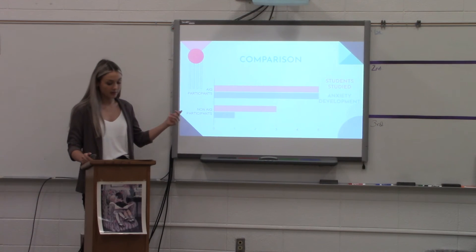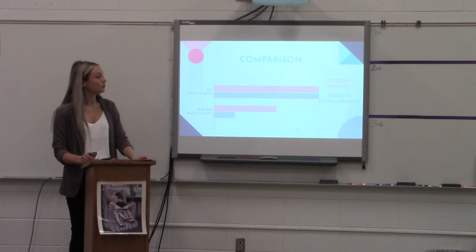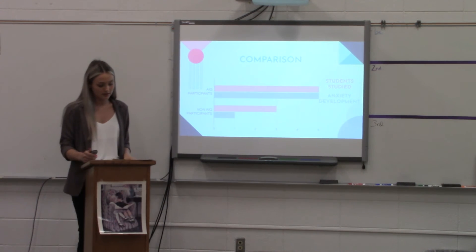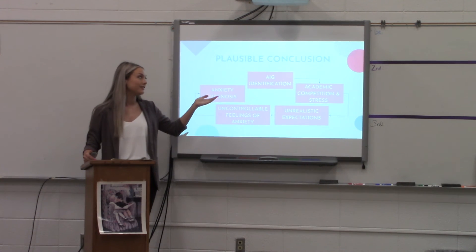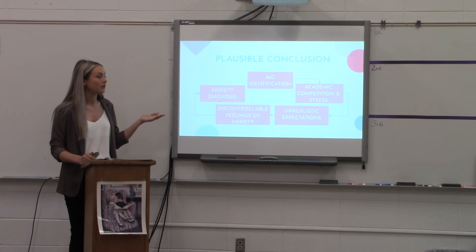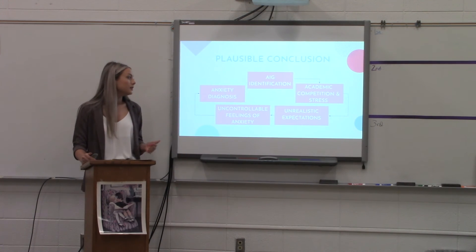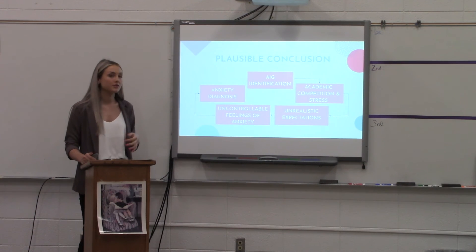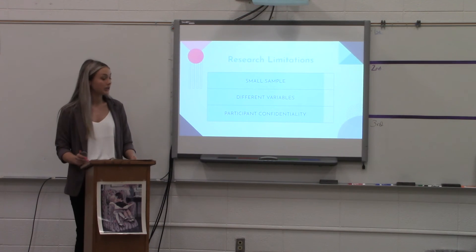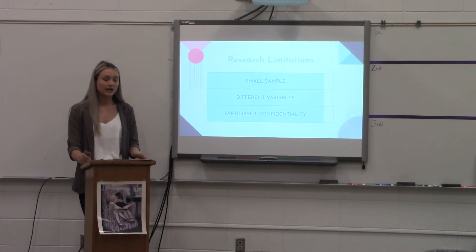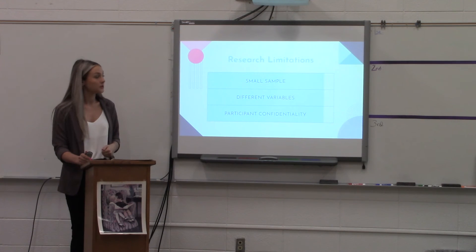These findings show counter-research conducted as a way to further prove the initial hypothesis. An assumption can be made to solidify the correlation between AIG identification and the development of severe forms of anxiety. A plausible conclusion is shown as a pathway to anxiety diagnosis: it begins with AIG identification, typically in third grade, which leads to academic competition and stress, which can lead to unrealistic expectations of the student, their work, and their peers, which then leads to uncontrollable feelings of anxiety, and eventually an anxiety diagnosis. It is important to note that the development of anxiety can result from multiple life stressors as well as genetics. There was an apparent correlation between recipients identified as AIG and those diagnosed with an anxiety disorder.